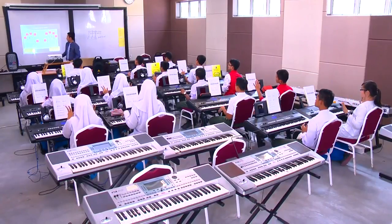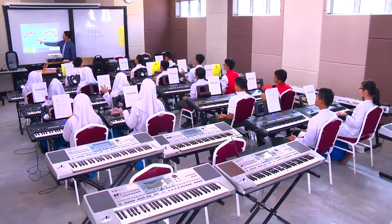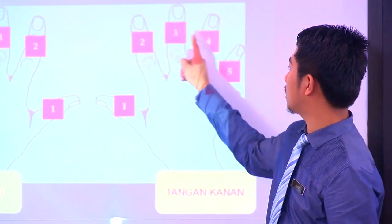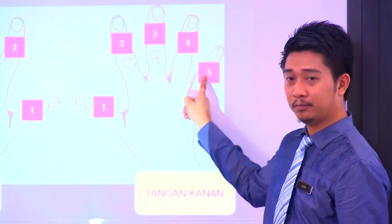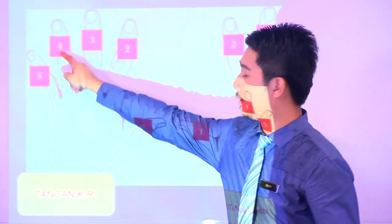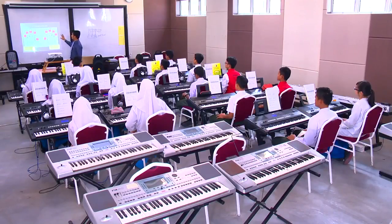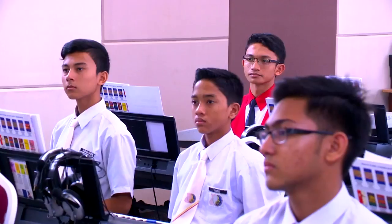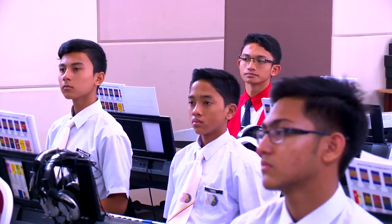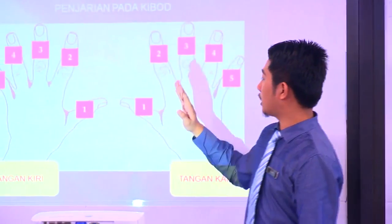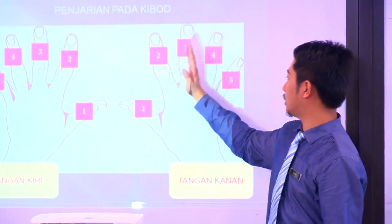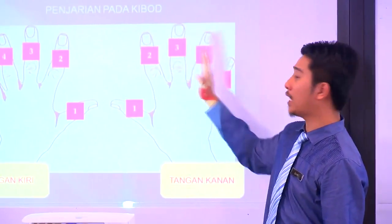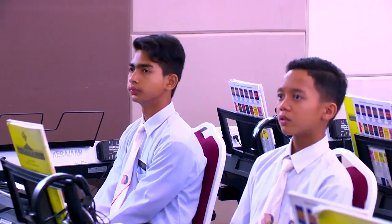Satu, dua, tiga, empat, lima. Kita lihat di hadapan - satu adalah ibu jari, dua, tiga, empat, lima. Sama, kiri pun sama. Apabila kita gunakan jari yang ada di hadapan, untuk cord tonic ataupun triad tonic, cuma perlukan jari satu, jari tiga dan jari lima sahaja.